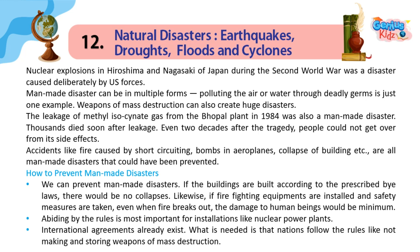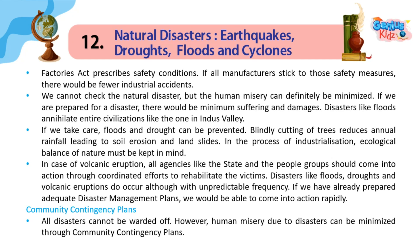How to prevent manmade disasters? We can prevent manmade disasters. If buildings are built according to prescribed bylaws, there would be no collapses. Likewise, if firefighting equipment is installed and safety measures are taken, even when fire breaks out, the damage to human beings would be minimum. Abiding by the rules is most important for installations like nuclear power plants. International agreements already exist; what is needed is that nations follow the rules, like not making and storing weapons of mass destruction. The Factories Act prescribes safety conditions — if all manufacturers stick to those safety measures, there would be fewer industrial accidents.